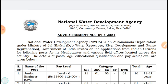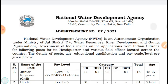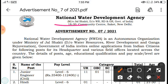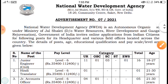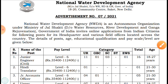Today there is a very big update and a big opportunity for all civil engineers. In National Water Development Agency, there are vacancies under advertisement number 7-20-21. National Water Development Agency is an autonomous organization under the Ministry of Jal Shakti — that is the Water Resource Department and River Development Ganga Rejuvenation — under the Government of India.